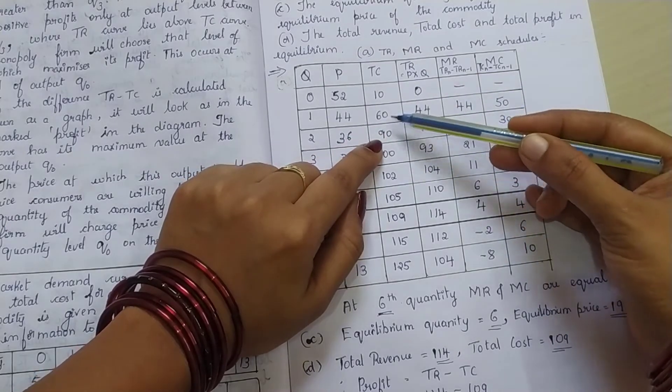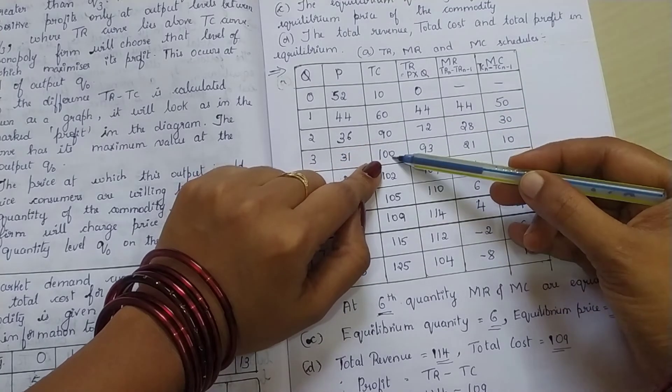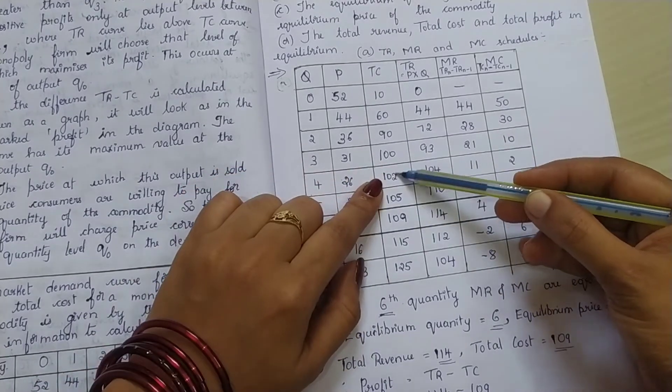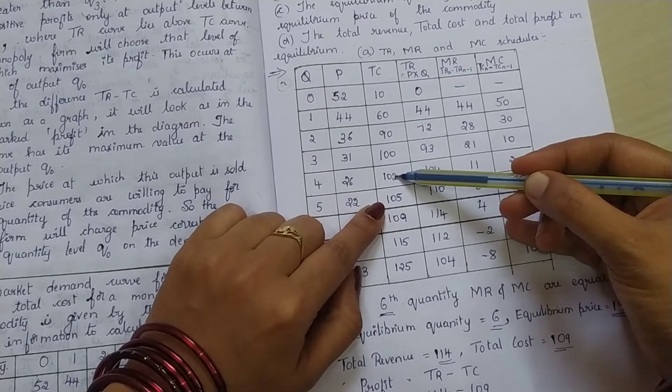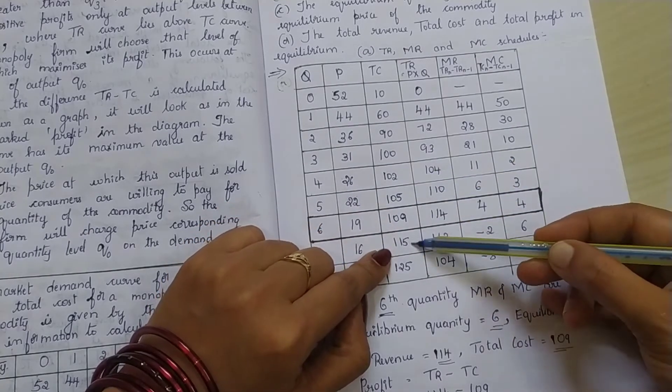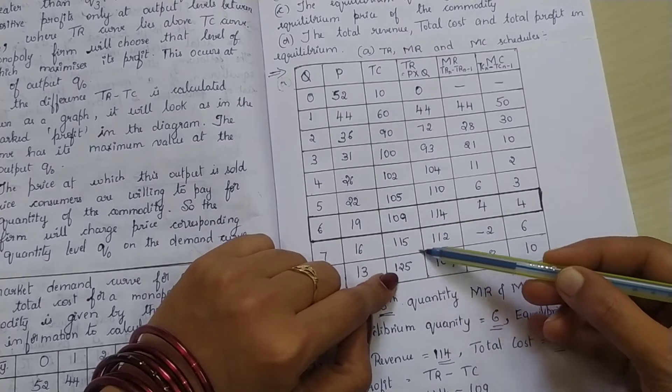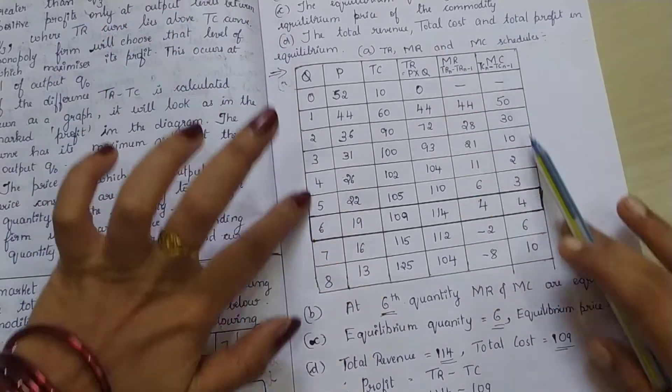Next one again, 90 minus 60, 90 minus the previous value 60, that is 30. Then, 100 minus 90, which is 10. Next one, 102 minus 100, that is 2. 105 minus 102, 3. Next, 109 minus 105, 4. 115 minus 109, 6. Last one, 125 minus 115, that is 10. So, the table is complete. Which means your first question is complete. MR and MC schedules we have obtained, okay?